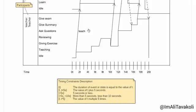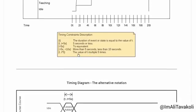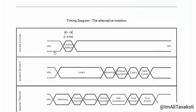We can show all the other states — how long they stay and when they change to another. Now let's look at Timing Constraints more closely. If we write t, it means the duration of an event or state equals the value of t. We can show '5 seconds or less' in two equivalent ways. Another constraint means more than 5 seconds and less than 10 seconds. Another notation means the value of t multiplied 5 times. There is also an alternative notation for the Timing Diagram that is equivalent to the standard one.